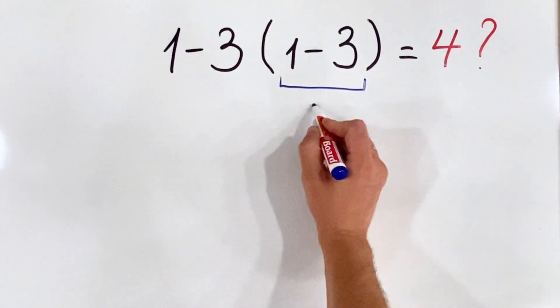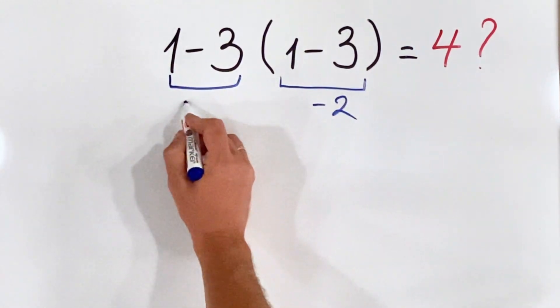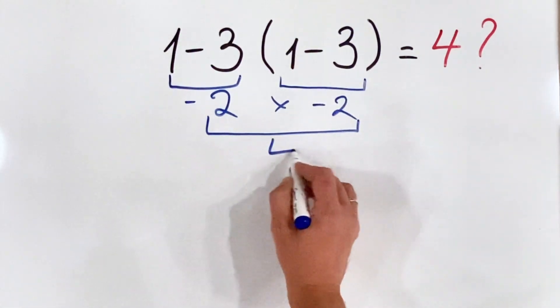1 minus 3 times (1 minus 3) equals 4? Taking 1 minus 3 equals minus 2, and 1 minus 3 equals minus 2, then minus 2 multiplied by minus 2 equals 4.